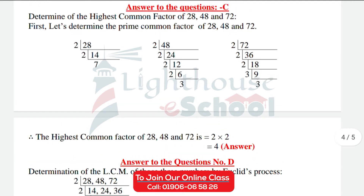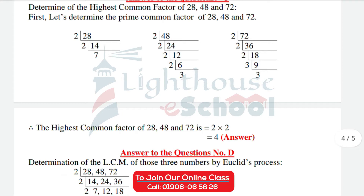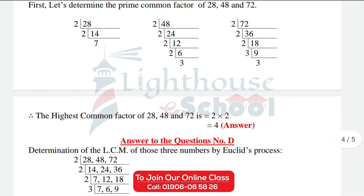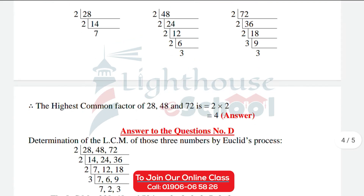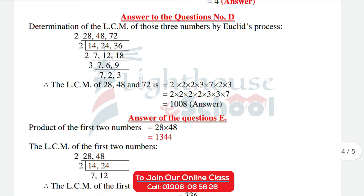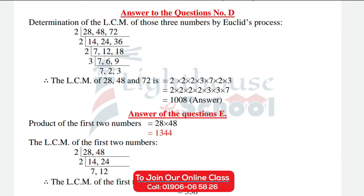So the HCF calculation gives us 4. The highest common factor of 28, 48, and 72 is 4. This is question C. Now for the determination of the LCM of those three numbers — 28, 48, and 72 — by Euclid's process.